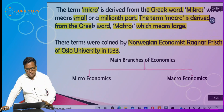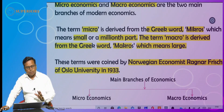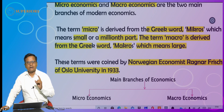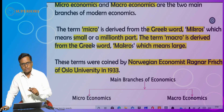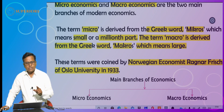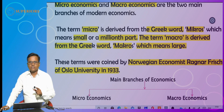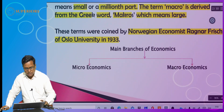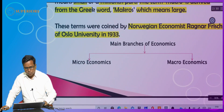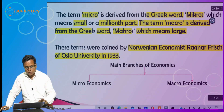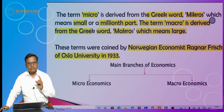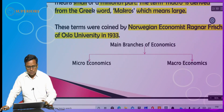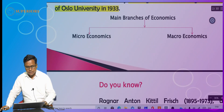Both the words micro and macro in English are derived from Greek words. Micro is derived from micros, which means small, and macro is derived from macros, which means large or big. These two terms were coined first of all by Professor Ragnar Frisch in 1933.